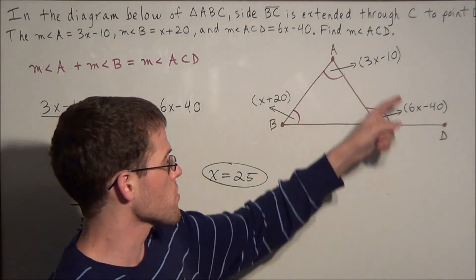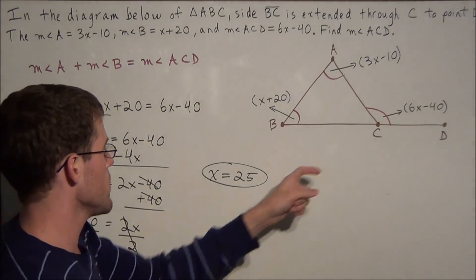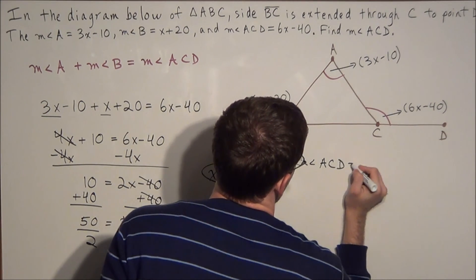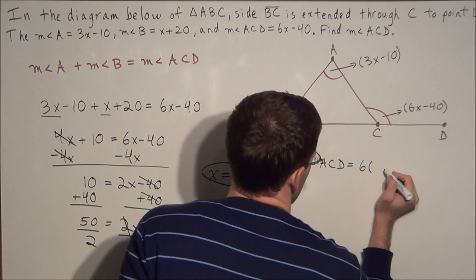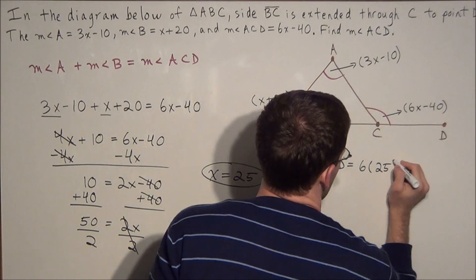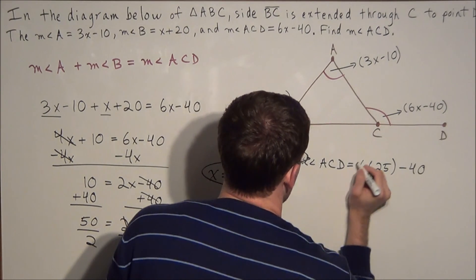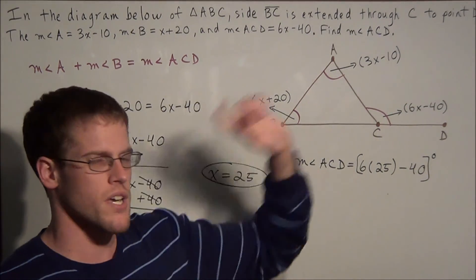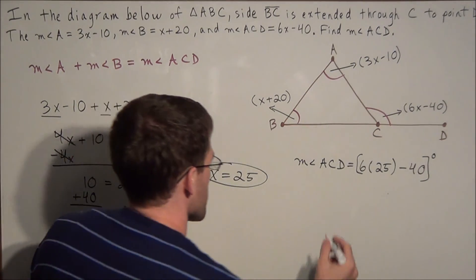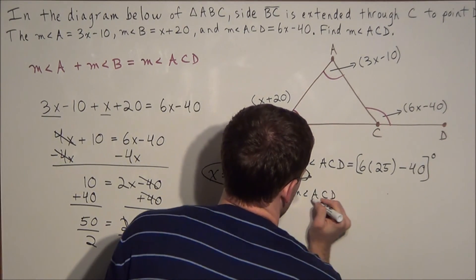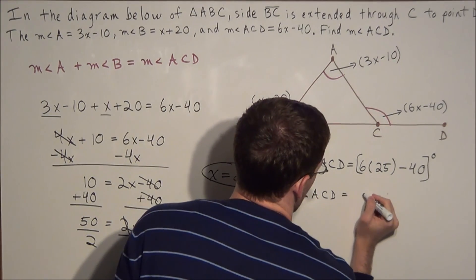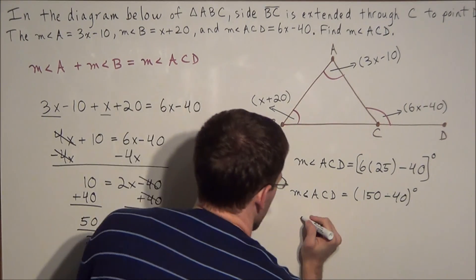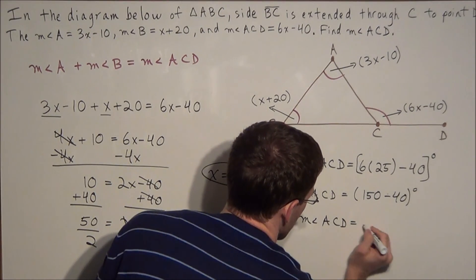x equals 25 is not our final answer — we need to find the measure of angle ACD. We substitute x equals 25 into the expression 6x minus 40. Since we are finding the measure of an angle in Euclidean geometry, we use degrees. The measure of angle ACD equals 6 times 25, which is 150, minus 40 degrees. So our final answer is the measure of angle ACD equals 110 degrees.